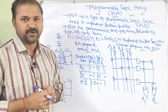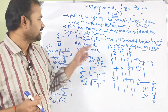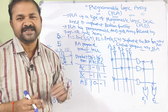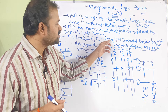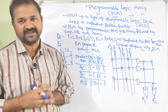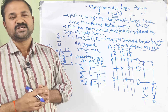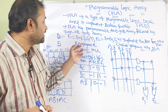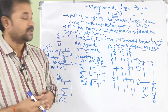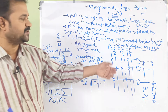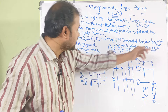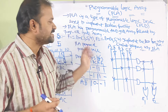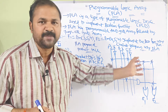Let's see an example. Here two boolean functions are given. The first function is F1 = Σm(3, 5, 7), so these are minterms, and F2 = Σm(4, 5, 7), so these are also minterms. In the examination they may give a truth table, or directly give boolean expressions or boolean functions like this. The target is to implement these boolean functions using PLA.